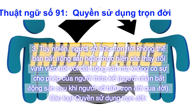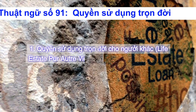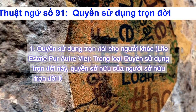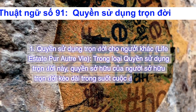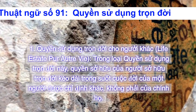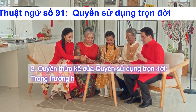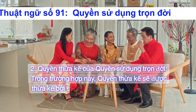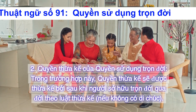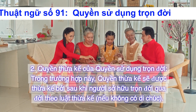Các loại quyền sử dụng trọn đời. 1. Quyền sử dụng trọn đời cho người khác. Trong loại quyền sử dụng trọn đời này, quyền sở hữu của người sở hữu trọn đời kéo dài trong suốt cuộc đời của một người được chỉ định khác, không phải của chính họ. 2. Quyền thừa kế của quyền sử dụng trọn đời. Trong trường hợp này, quyền thừa kế sẽ được thừa kế bởi người thừa kế của người sở hữu trọn đời sau khi qua đời theo luật thừa kế, nếu không có di chúc.